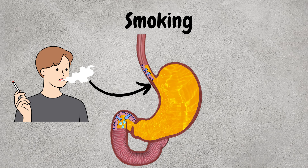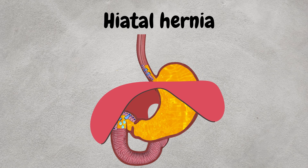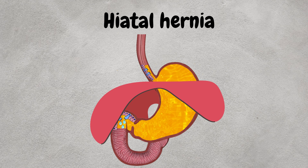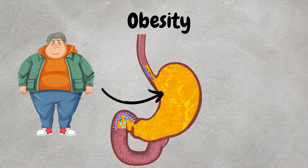Smoking weakens the lower esophageal sphincter, thereby increasing the risk of Barrett's esophagus. Also, hiatal hernia — a condition where a portion of the stomach protrudes into the chest through the diaphragm — can significantly contribute to GERD and thus increases the risk of Barrett's esophagus. Then obesity is also a factor; excess weight can increase abdominal pressure, leading to more frequent episodes of acid reflux.